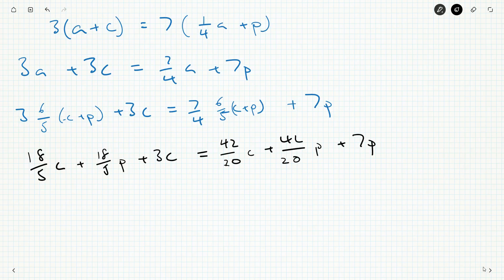Because we've got this equal sign, let's just multiply both sides by 20. So this will be 72 C plus 72 P plus 60 C is 42 C plus 42 P plus 140 P.